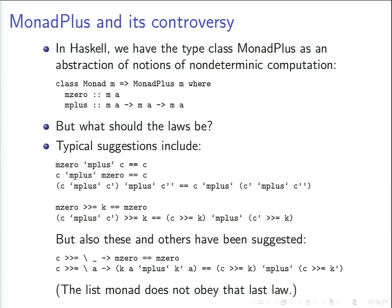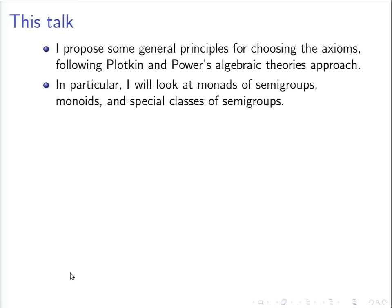Typical suggestions include things saying essentially that M-plus is associative and M0 is a unit for it. There is something that looks like an absorption law, a distributivity law which looks like left distributivity, and suggestions of distributivity from other directions. There is something called the left-catch law, which is good for the Maybe monad but falsified by the List monad. The List monad also refutes this one. So it's a bit of a mess. I just want to look at the problem and propose some general principles for choosing the axioms.